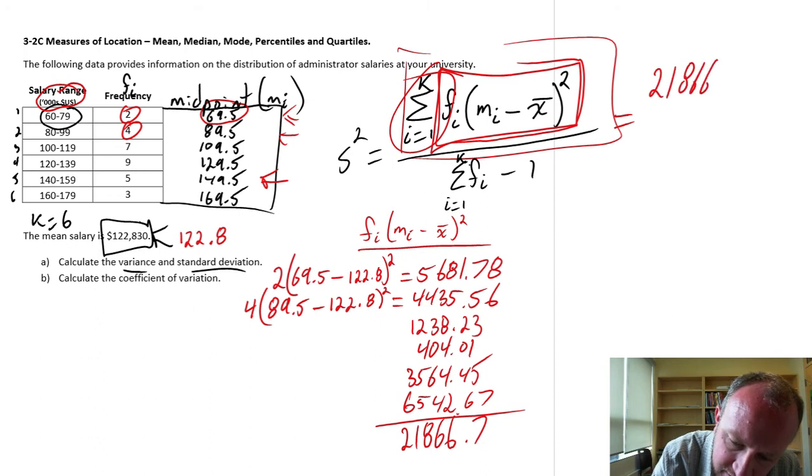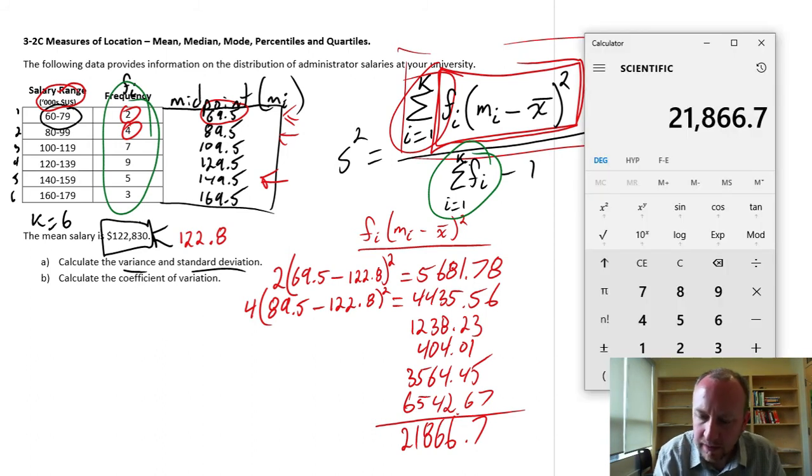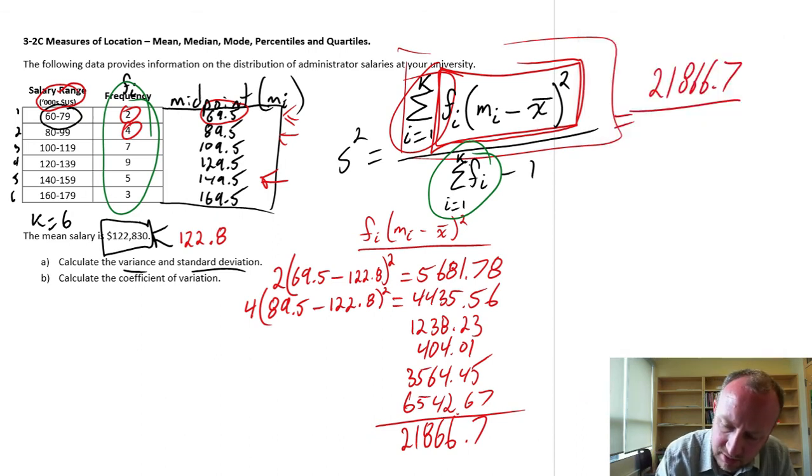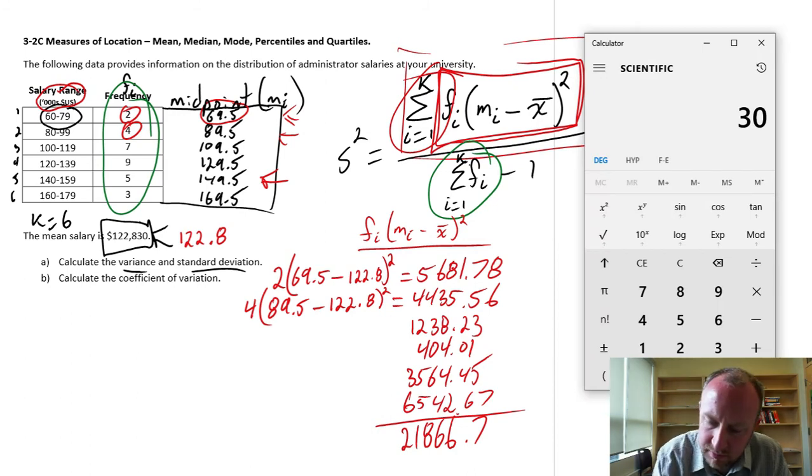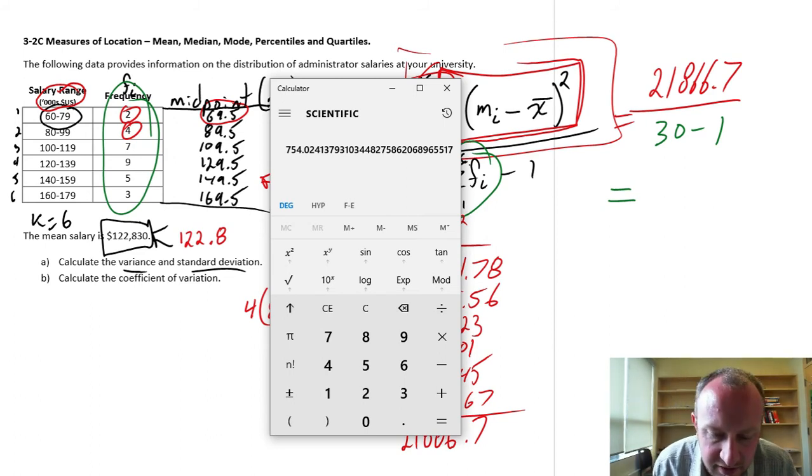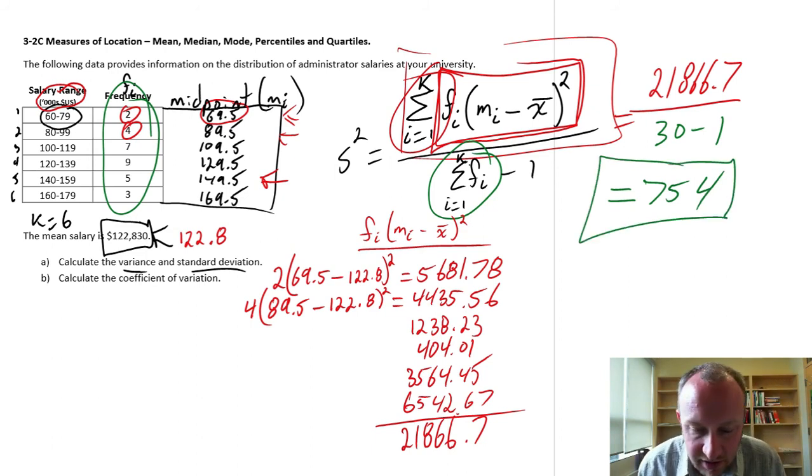21866.7 divided by. Now, this sum of the frequencies. So that's this piece here. We're just adding together all of this. So this is 2 plus 4, plus 7, plus 9, plus 5, plus 3. So I have 30. 30 minus 1. Equals. 21866.7 divided by 29. And finally, we have our variance, 754. So there's our variance of these administrator salaries.